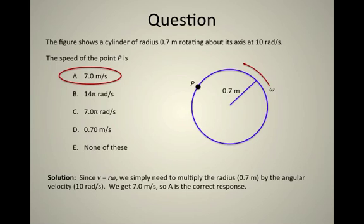So all we need to do is multiply omega times the radius, and we will get the velocity v. That's the speed of this point P. And we get 7.0, so A is the correct response.